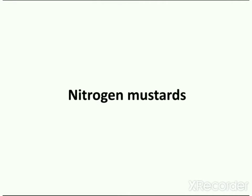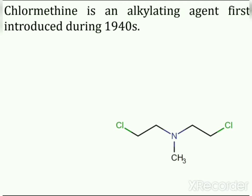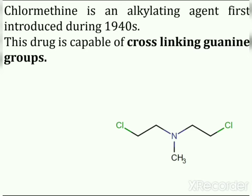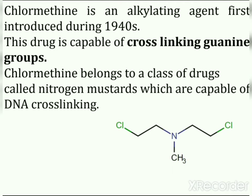The lead compound for the generation of Nitrogen Mustards was chlormethane, also known as mechlorethamine. Nitrogen mustard compounds are compounds having two beta-haloalkyl groups bonded to a nitrogen atom. Chlormethane belongs to this class of drugs called Nitrogen Mustards, which are capable of DNA cross-linking. In this structure you can see two beta-haloalkyl groups bonded to the nitrogen atom.